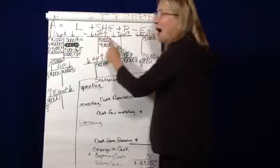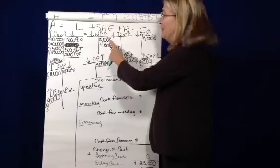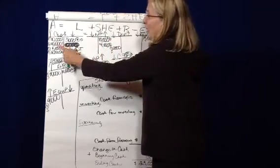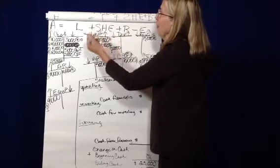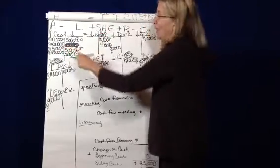So there we borrowed $10,000 from a bank or from someone else and signed a note. So my cash increased and my notes increased. Because this is a long-term liability, it's a financing activity, so we put an F by it.